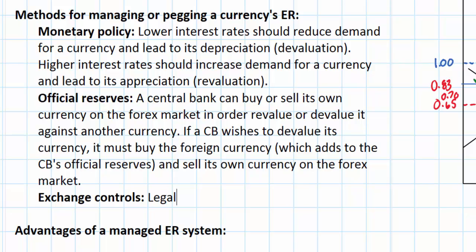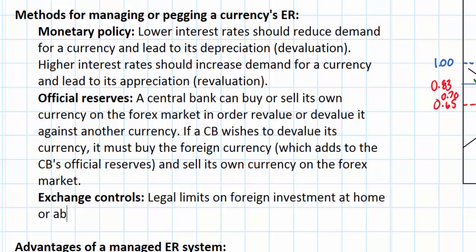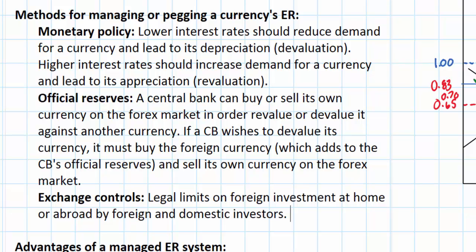Exchange controls are legal limits on foreign investment at home or abroad by foreign and domestic investors. By limiting the amount of foreign investment in the country allowed by foreign investors, a government can essentially minimize the amount of demand for its currency on the forex market. An example is how the Chinese government for decades has limited foreign investment in China in order to help keep the value of the Chinese currency weak against the US dollar, giving China an export advantage in global trade.